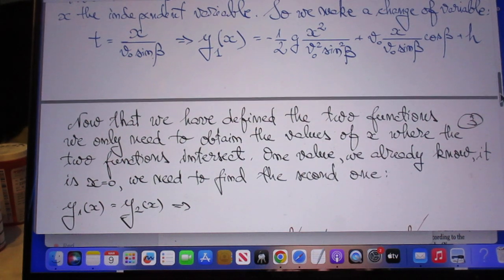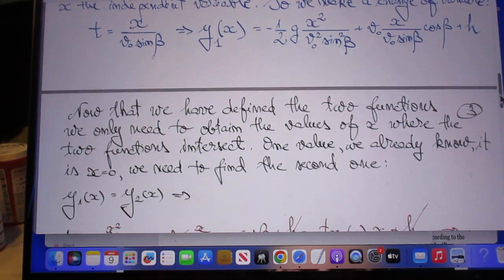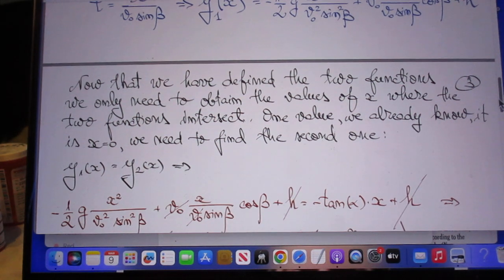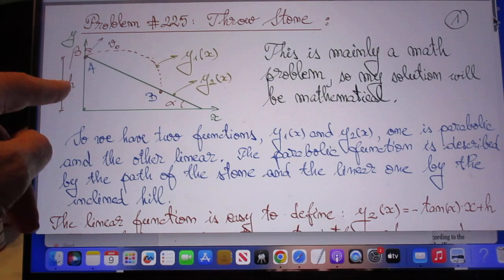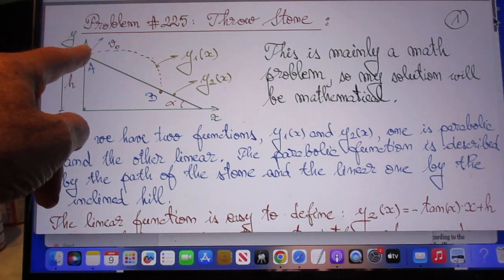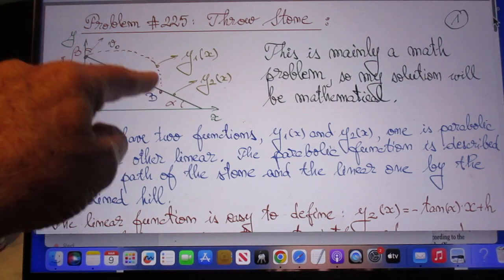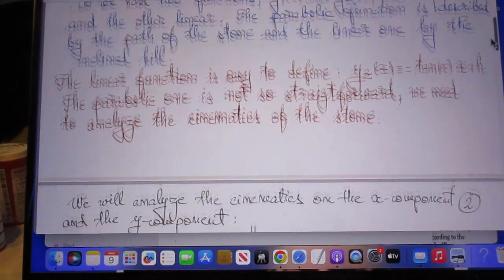So he writes now that we have defined the two functions, we only need to obtain the values of x where the two functions intersect. One value we really know is x equals zero. So we know that at x equals zero where the object is, now we have to find the second position.